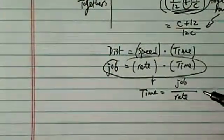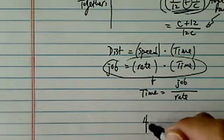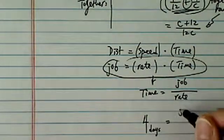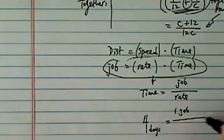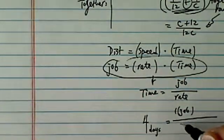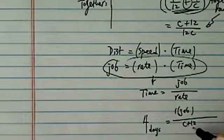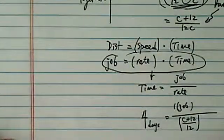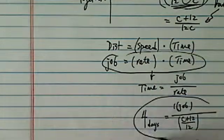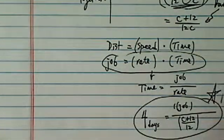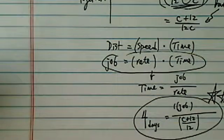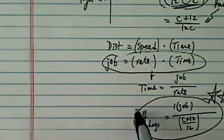We're given that together their time is 4 days, which equals one job divided by the together rate we simplified before: (C plus 12) over 12C. Having gotten this equation, 90% of the work is done — you have one equation and one unknown, and you're going to solve for C.